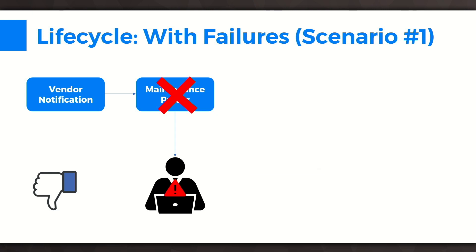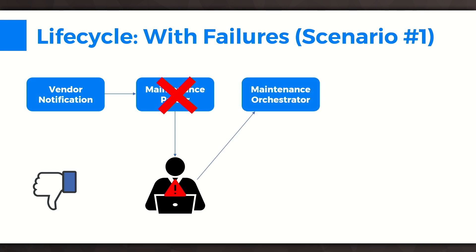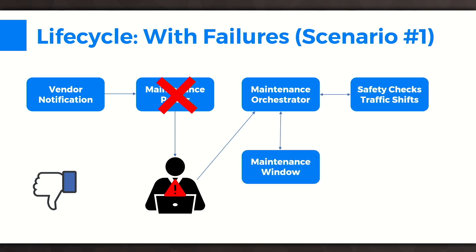Based on the type of failure, the human will contact the vendor and work with them. A typical reason would be it's a new vendor — we will try to adopt them to a standard parsing logic or write a custom internal parser for them. Because in this flow the maintenance parser did not call the orchestrator, the human would have to go ahead and schedule the maintenance in the maintenance orchestrator manually. For subsequent maintenances from the same vendor, if the parser is updated, the flow gets automated and the maintenance parser will then call the maintenance orchestrator automatically.